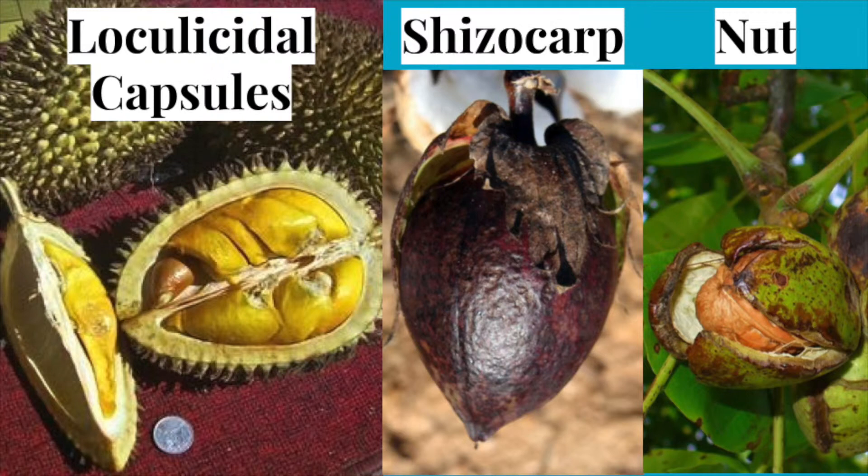Malvaceae fruit can split up into mericarps at maturity. This is called a schizocarp. However, Malvaceae fruit can also exist as a nut.